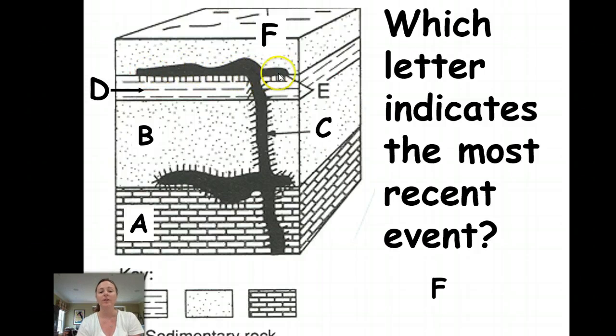Then E indicates contact metamorphism and F was the deposition of the horizontal layer on top of the intrusion. And we know that F came after because there is no contact metamorphism occurring at that spot right along the edge at the top here where the igneous intrusion and letter layer F meet. A lack of contact metamorphism means that the top layer came after the intrusion in that instance.